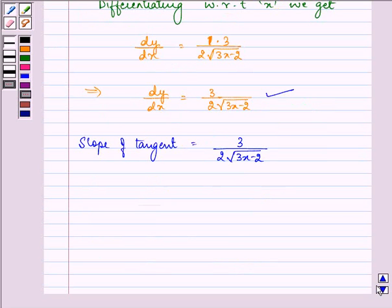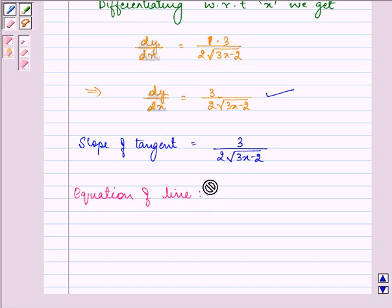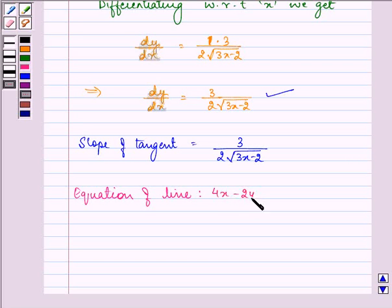We have the slope for the tangent. We will be finding the slope of the line and then equating them to get the required answer. Here equation of the line is given to us as 4x minus 2y plus 5 equals 0. This implies 2y equals 4x plus 5,